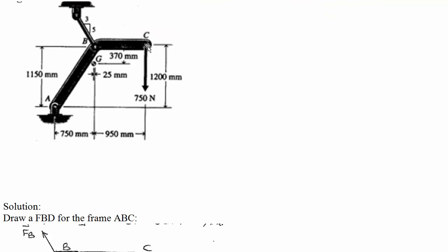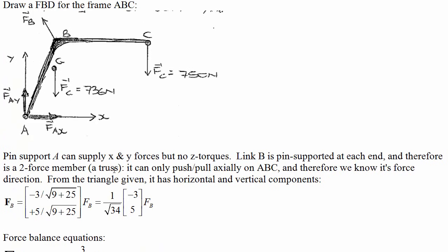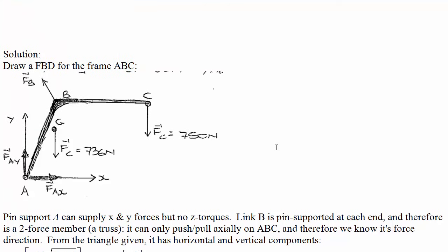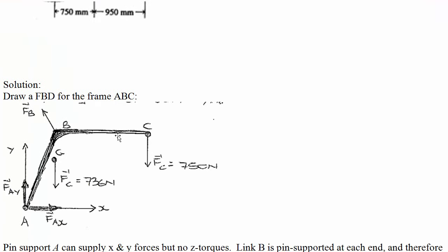Okay so what we want to do is draw a free body diagram for this member. Here's an example of that. You can also label the distances in the free body diagram if you like. So pin support A can supply x and y forces but it can't supply torques, and link B is a two force member. It's a truss so it can only apply a force axially, which tells us what the direction of the force is. It may actually be the opposite direction to this so it may end up being in compression. We've drawn it as if it's in tension, but at least we know which way it's going so that we can draw it like this and then maybe it's negative.